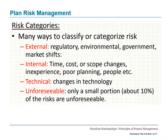First, external risks — as the name suggests, these are external to the project and the organization you are part of. Examples include regulatory, environmental, government, and market shifts, which can all create external risks. Internal risks are risks within your organization or the project context — such as time, cost, or scope changes, inexperienced staff, poor planning, or people issues. The good news is that you have control over internal risks because they are internal to you.